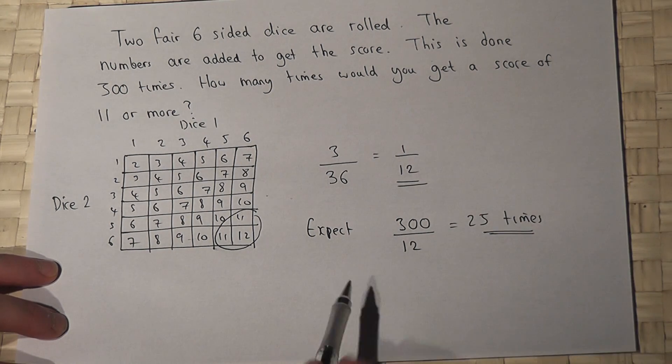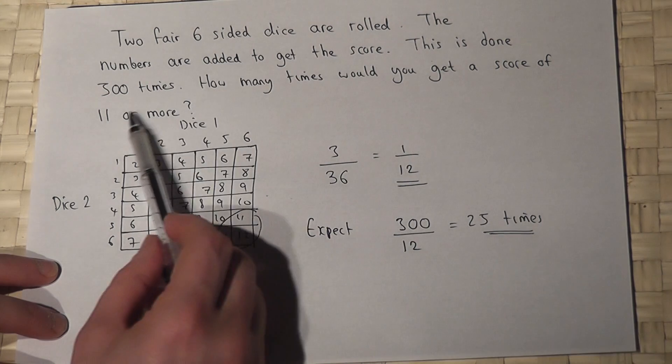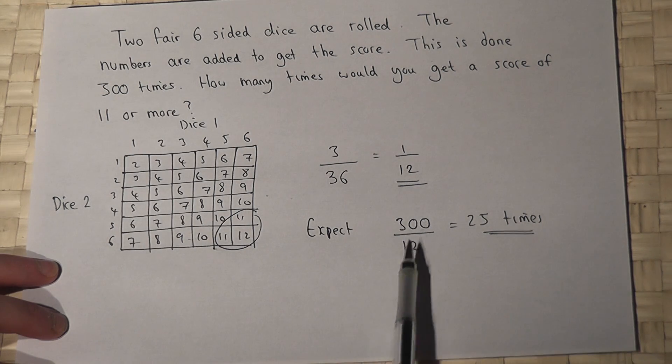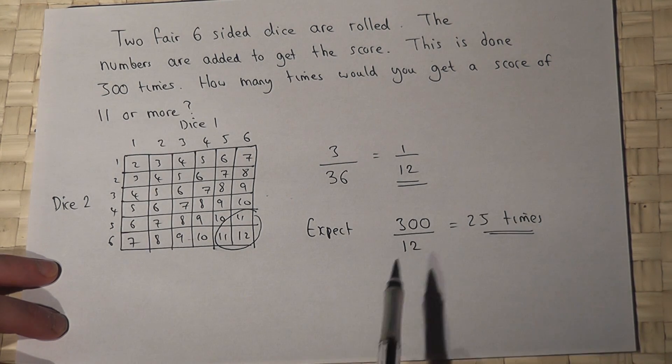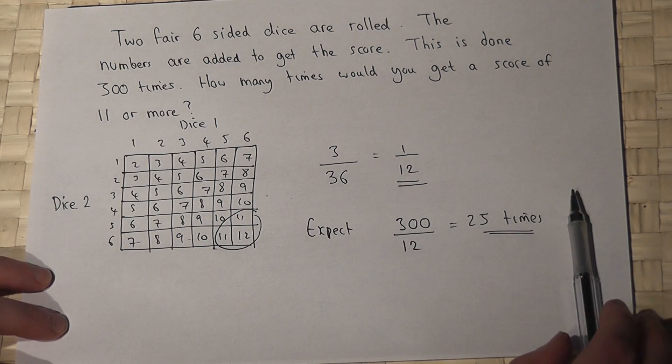So again, if we do this three hundred times, one-twelfth of them will be eleven or more, and one-twelfth of three hundred is twenty-five. So we expect a score of eleven or more twenty-five times.